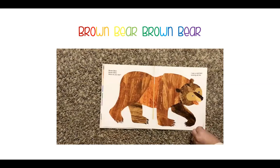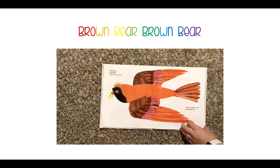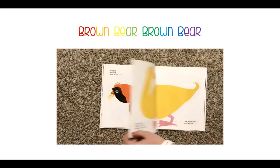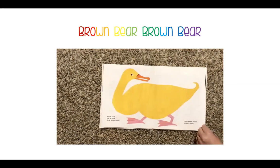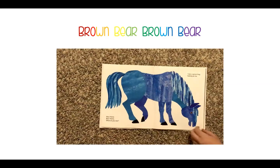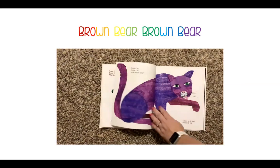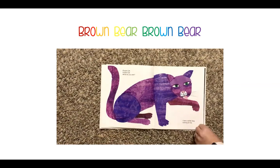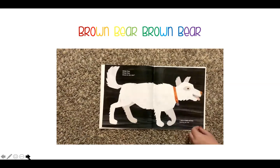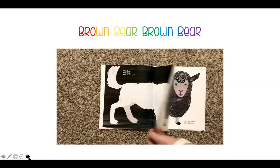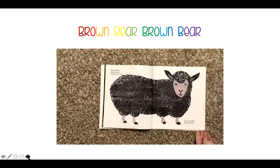Brown Bear, Brown Bear, what do you see? I see a red bird looking at me. Red bird, red bird, what do you see? I see a yellow duck looking at me. Yellow duck, yellow duck, what do you see? I see a blue horse looking at me. Blue horse, blue horse, what do you see? I see a green frog looking at me. Green frog, green frog, what do you see? I see a purple cat looking at me. Purple cat, purple cat, what do you see? I see a white dog looking at me. White dog, white dog, what do you see? I see a black sheep looking at me. Black sheep, black sheep, what do you see? I see a goldfish looking at me.